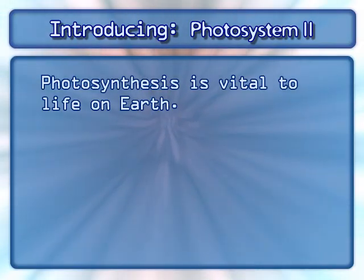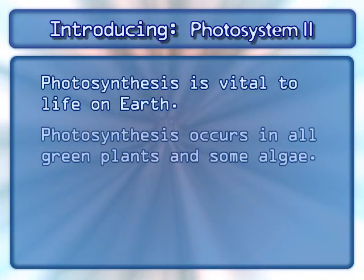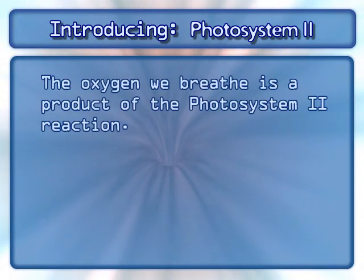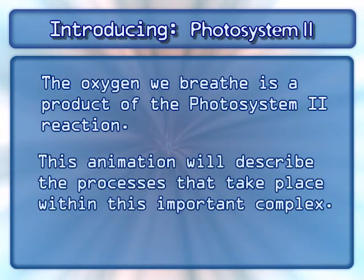Photosynthesis is vital to life on Earth. Photosynthesis occurs in all green plants and some algae. One of the first stages of photosynthesis involves Photosystem II. The oxygen we breathe is a product of the Photosystem II reaction. This animation will describe the processes that take place within this important complex.